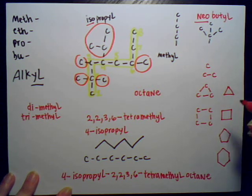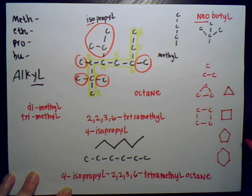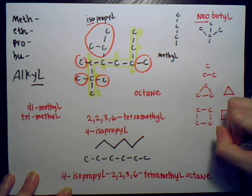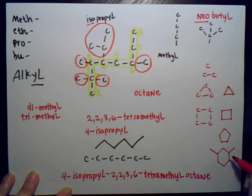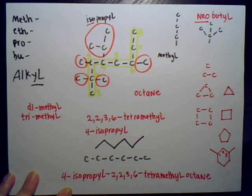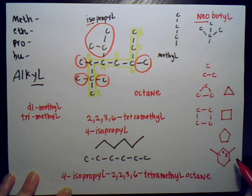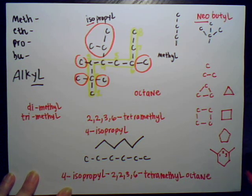These cyclic compounds are very common in organic chemistry. If we had substituents attached to cyclohexane — for example, a group attached here and another group attached here — then the last name would be cyclohexane. We number the ring: carbon one, two, three. So we would have 1,3-dimethylcyclohexane. That's how you name substituted cyclic compounds.